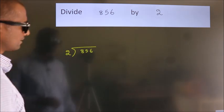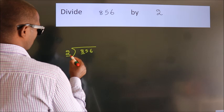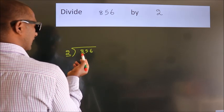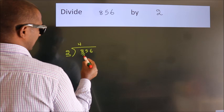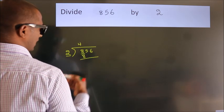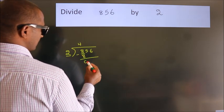Next, here we have 8, here 2. When do we get 8? In 2 table, 2 fours is 8. Now, we should subtract, we get 0.